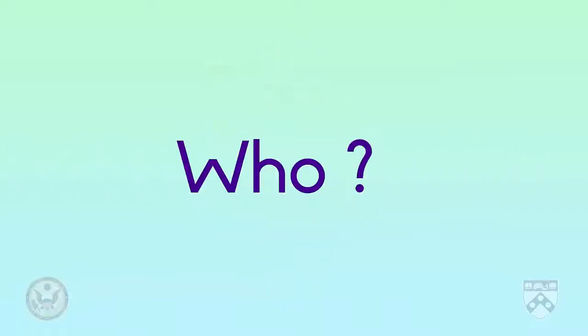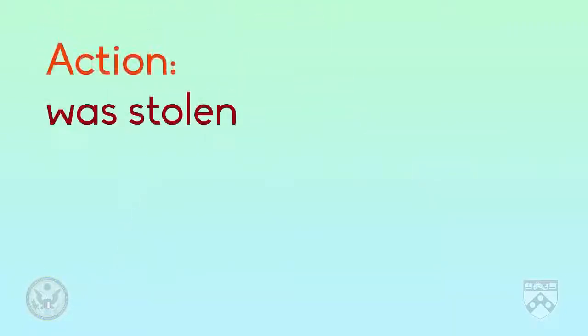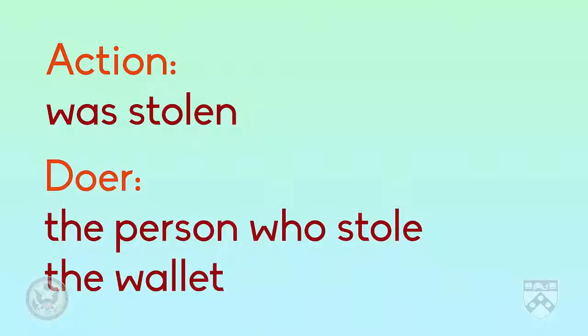Similarly, we don't know who made the mistakes in the article, but we can understand that it means the journalist who wrote the article. And finally, in the last example, we don't know who stole the wallet. So in this example, the emphasis is on the action — 'was stolen' — rather than the doer, the person who stole the wallet.